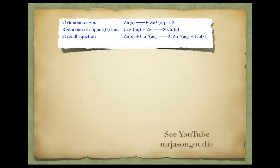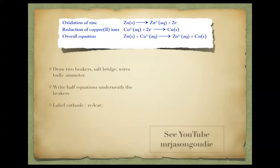Here's an example where we draw the two beakers with the salt bridge and wires, write the half equations, label the cathode using 'red cat', label the anode, and show the direction of electron flow. This will be shown in a YouTube video or another downloadable video.